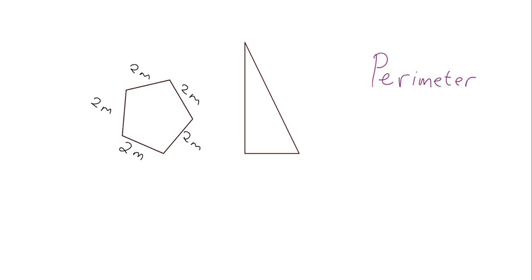So what's the perimeter? Well if I walk around the shape, it's two, plus two is four, plus two is six, plus two is eight, plus two is ten. And so the perimeter in this case is ten meters.